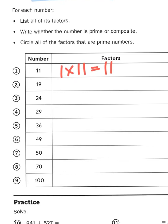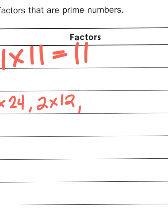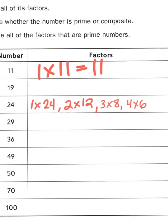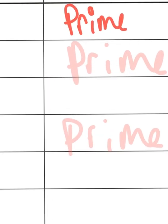Well, we know that 1 times 24 will work. And because 24 is even, 2 is a factor as well. 2 times 12 gets me to 24. I also have 3 times 8 and 4 times 6. These are all factor pairs that get me to 24. So that would make this number composite.